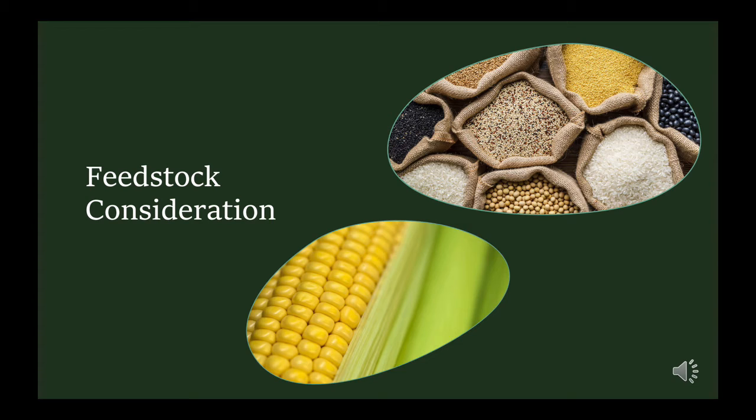Corn stover is very similar in the sense that it is the leftover leaves and stalks from the corn. While the kernels of the corn can be used for human or animal consumption, the leaves are usually used only as a fuel for burning. If a process to convert the lignocellulosic biomass into sugars is achieved, then both of these feedstocks can be used in ABE fermentation.